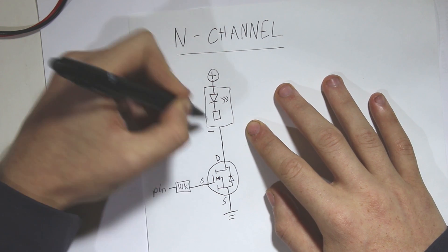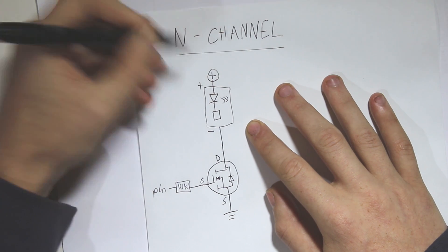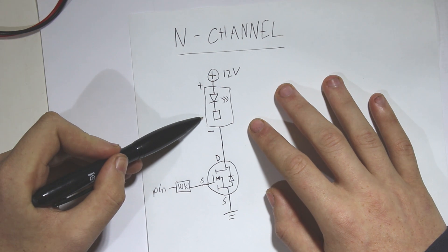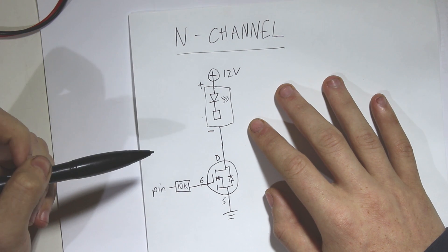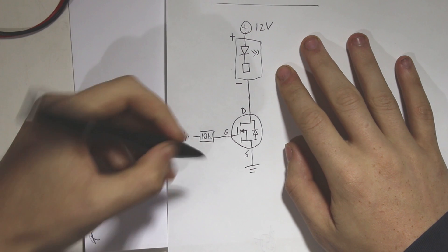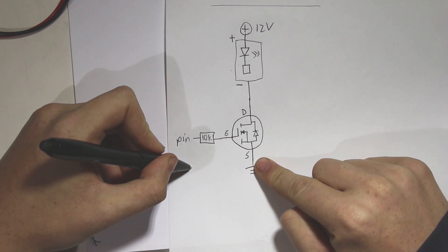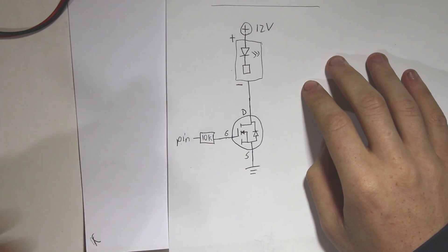This is the negative, that's the positive, and this will probably be 12 volts. And that's pretty much all there is to it. So with this design just make sure that your Arduino uses the same ground as the MOSFET, otherwise it won't work.